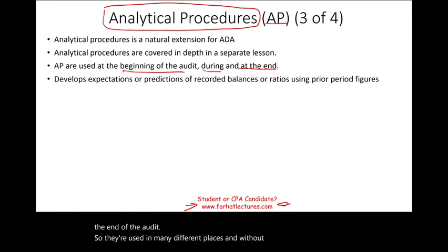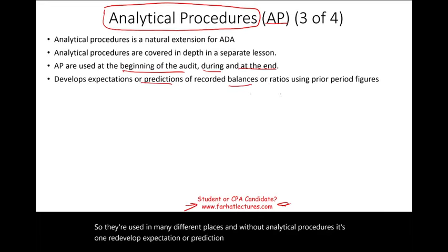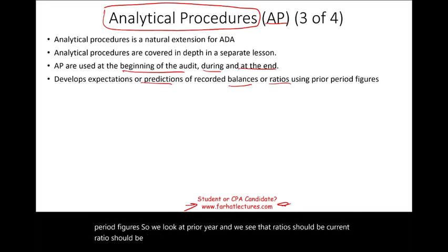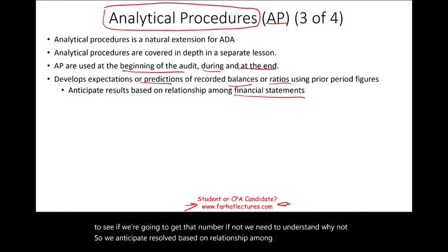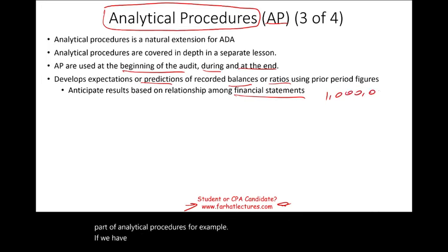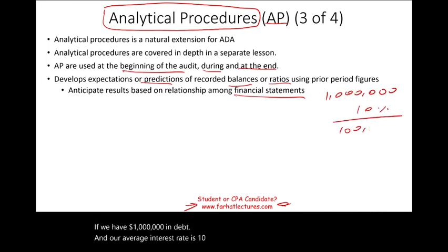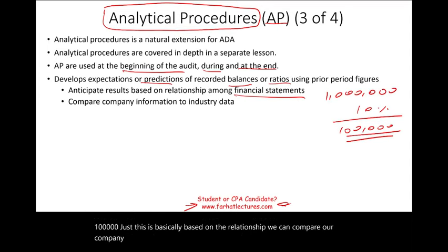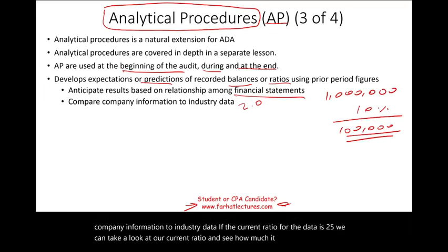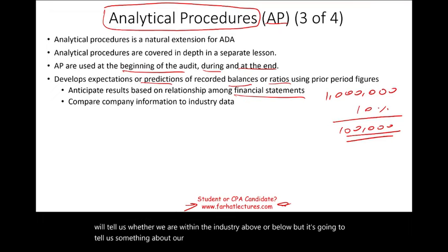Analytical procedures involve developing expectations or predictions of balances or ratios using prior period figures. For example, if the current ratio was 2.2 last year, that's the expectation — and if we don't get that number this year, we need to understand why. We anticipate results based on relationships among financial statements. If we have a million dollars in debt and our average interest rate is 10%, we expect interest expense of $100,000. We can also compare our company's information to industry data — if the industry current ratio is 2.5, we compare ours to see if it's reasonable.